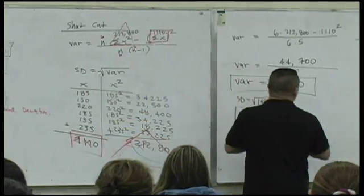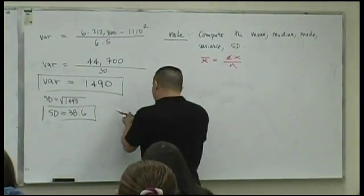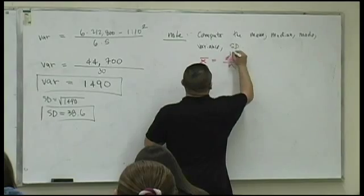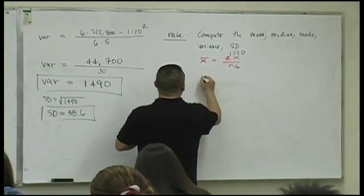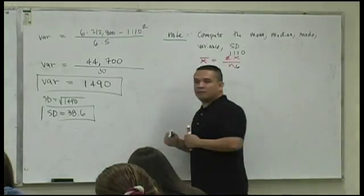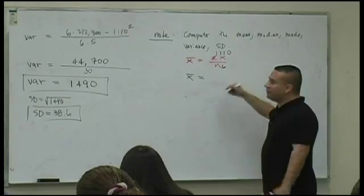Isn't it true that we already know this? What's the sum of the data values there? 1,110. What's n here? 6. Didn't you guys already compute the mean? Didn't you get that 1,110 divided by 6 already? Isn't that 185?